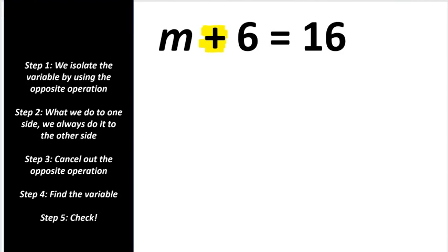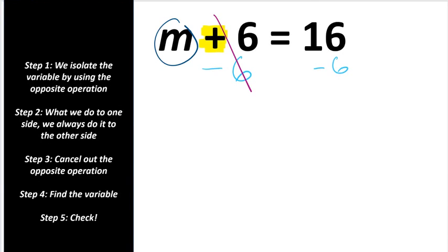We are adding 6, so the opposite of addition is subtraction — we're going to subtract 6. What we do to one side, we must do to the other side. Plus 6 minus 6 equals 0, so we just cross it off. We're left with m equals 16 minus 6, which is 10.